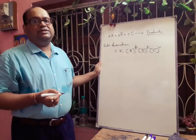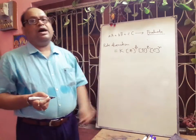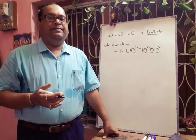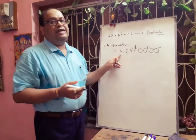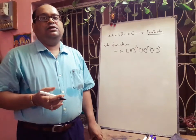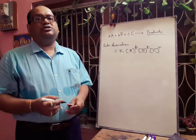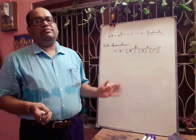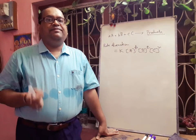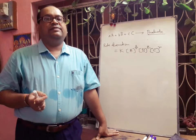We observe that the stoichiometric coefficients a, b, c are not used here; instead, exponents P, Q, R come from experiment. These are experimentally determined quantities. K is the rate constant, and P, Q, R are the concentration terms whose powers are experimentally determined. Stoichiometric coefficients and concentration term exponents may or may not be the same for a particular reaction. Rate constant can be defined as the rate of reaction when the concentration of each reactant is unity at a given temperature.